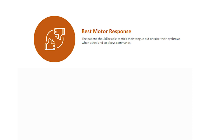A dilated pupil can indicate an expanding lesion on the same side of the brain. Pupils that are bilaterally fixed and dilated where motor response presents as flexion or localizing indicates a recent seizure. When assessing direct light response, a bright pen torch is moved across from the outer aspect of the eye over the pupil — it should constrict briskly. When removing the light, the pupil should return to its original size. The contraction and dilation of the pupil is the direct light response.